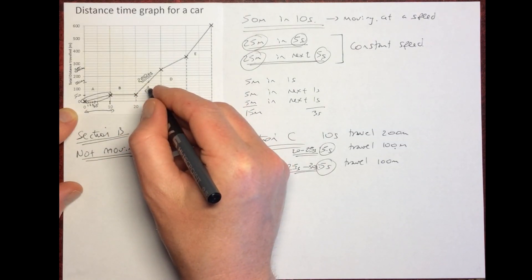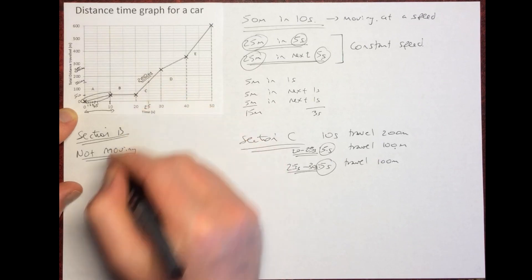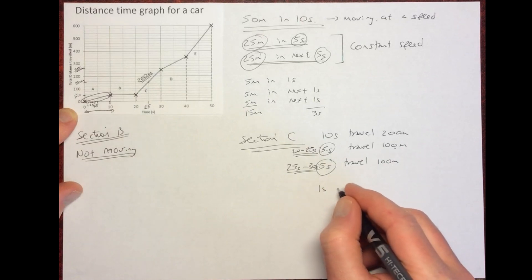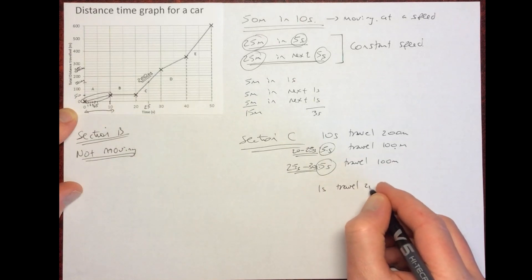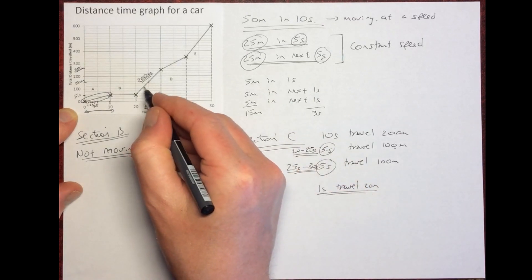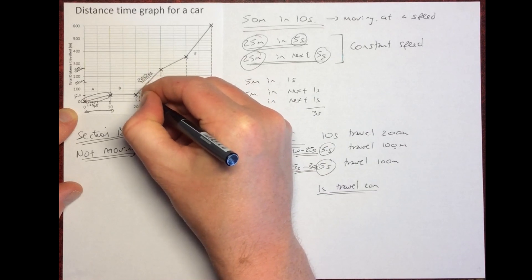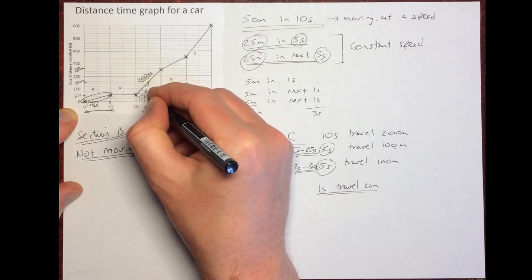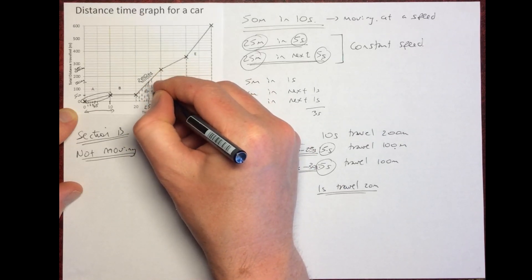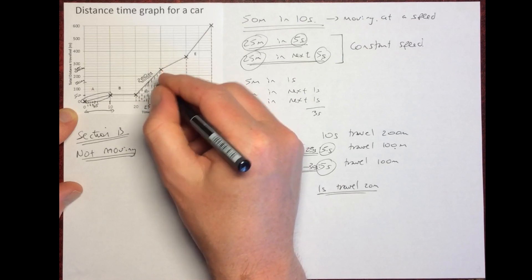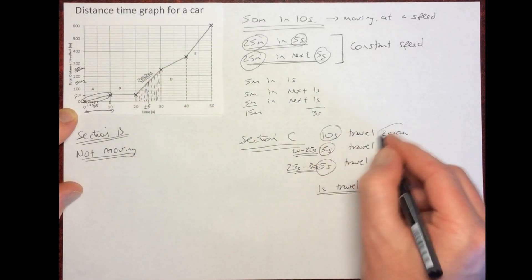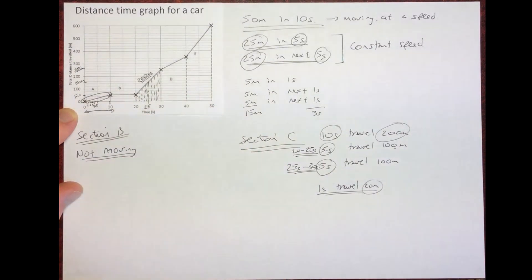Breaking section C down further, every single second we travel 20 meters. Traveling 20 meters every second consistently confirms that this section represents a constant speed.